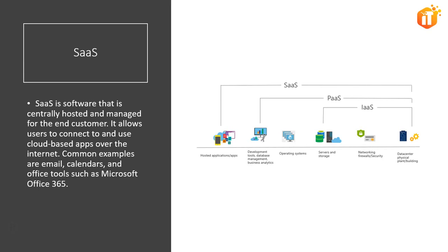Common usage scenarios for SaaS include Office 365, Skype, Microsoft Dynamics CRM Online, Salesforce.com, Facebook, or any other browsable application. Now that we understand these different types of cloud services — infrastructure as a service, software as a service, and platform as a service — let's also see the comparison between the three and understand both the advantages and disadvantages of each.